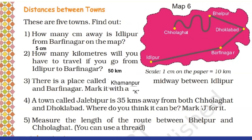Third question: there is a place called Kamanpur midway between Idlipur and Barfinagar — mark it with K. The total distance on the paper from Idlipur to Barfinagar is five centimeters, so the midpoint will be at 2.5 centimeters. At 2.5 centimeters, somewhat in the middle, we mark K representing Kamanpur.